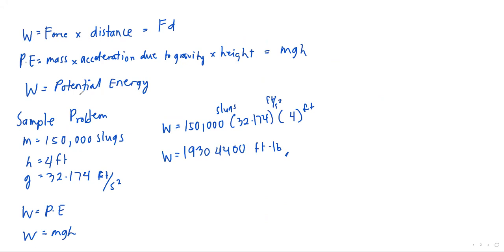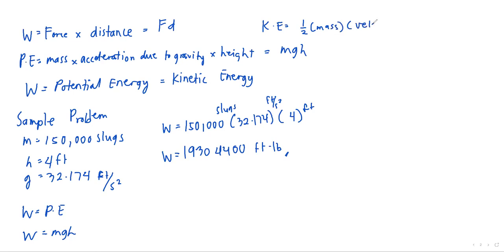We now have three related formulas: work equals force times distance; potential energy equals mgh; kinetic energy equals ½mv². Work equals potential energy equals kinetic energy in some sense — which leads us to the Law of Conservation of Energy.